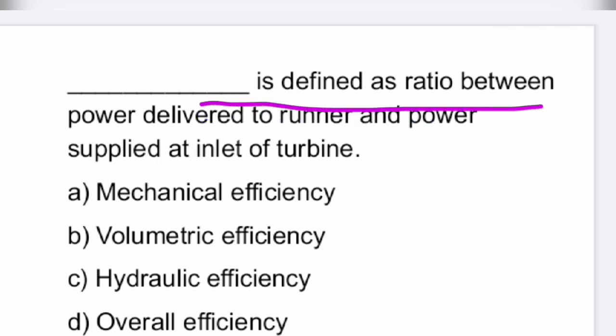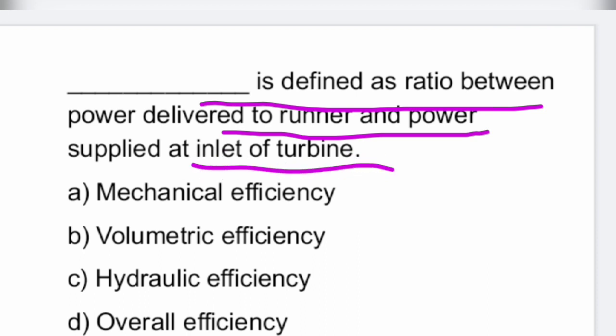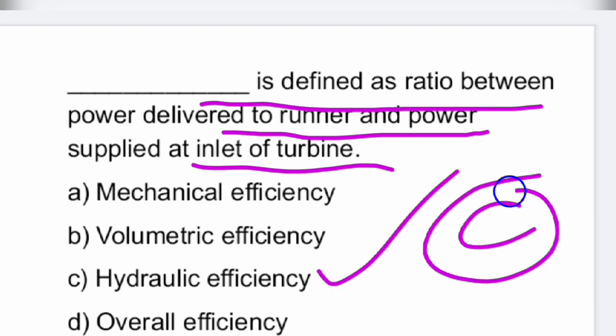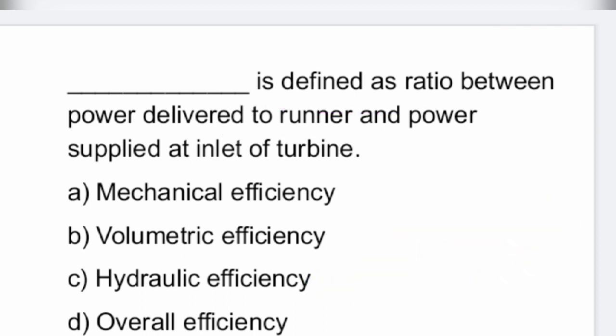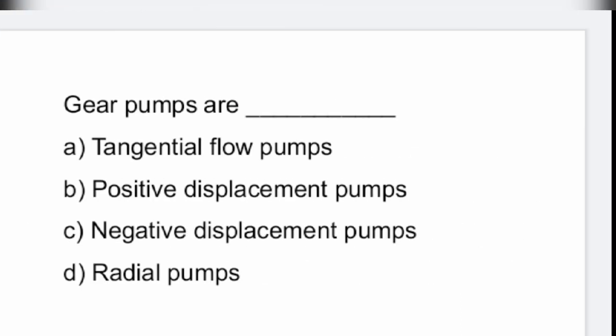Next: the ratio between power developed to the runner and power supplied at the inlet of the turbine is nothing but hydraulic efficiency. It is called hydraulic efficiency.